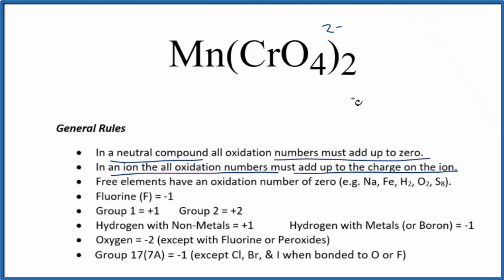We have two of them. So over here, we'll have oxidation numbers all adding up to minus four. In order for it to be a neutral compound, everything adds up to zero. This has to be plus four right here. So the oxidation number on the Mn in Mn(CrO4)2 is plus four.